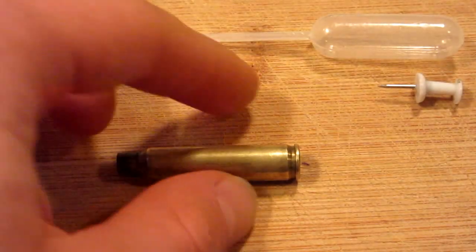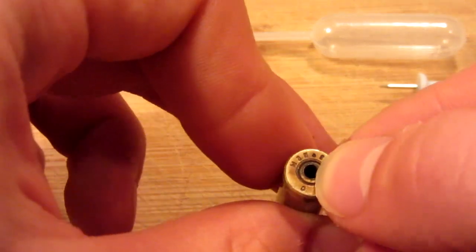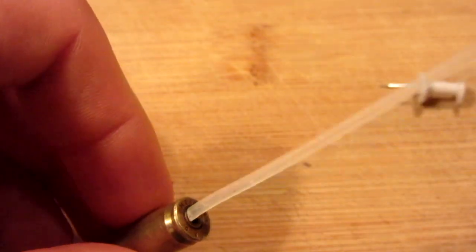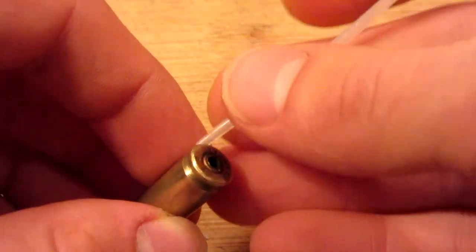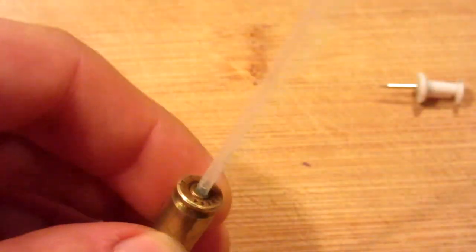Next, to prep your old shell casing, doesn't matter what size it is, but all you have to do is take a drill and drill out the old primer for the proper size, so that you can just ever so slightly fit in the pipette in the end.